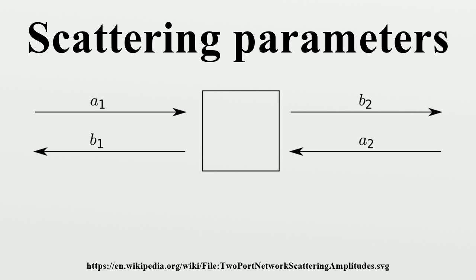Ports are the points at which electrical signals either enter or exit the network. Ports are usually pairs of terminals with the requirement that the current into one terminal is equal to the current leaving the other. S-parameters are used at frequencies where the ports are often coaxial or waveguide connections. The S-parameter matrix describing an N-port network will be square of dimension N and will therefore contain N² elements.